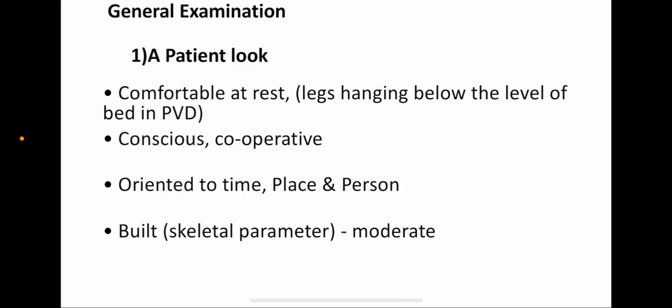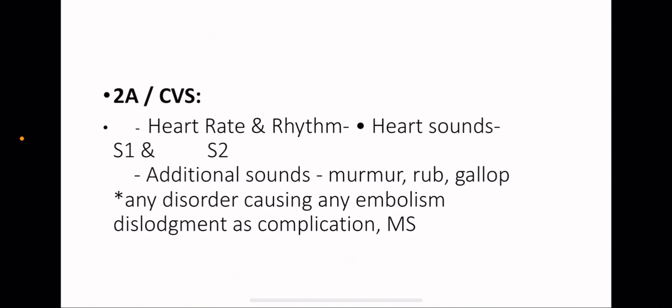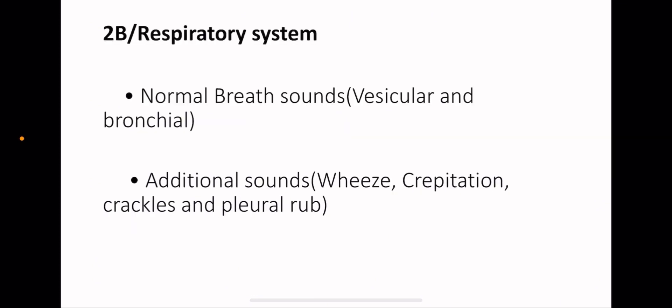We are now in two, related systems. 2A, the first related system is cardiovascular system. Just check the heart rate and the heart sounds S1 and S2. Check for any additional sounds like murmur, rub and gallop. Check for any disorder causing any embolism dislodgement as a complication, for example mitral stenosis. Patients will have a loud S1 and usually they will have dilated atrium and atrial fibrillation which may cause embolus to the lower legs.